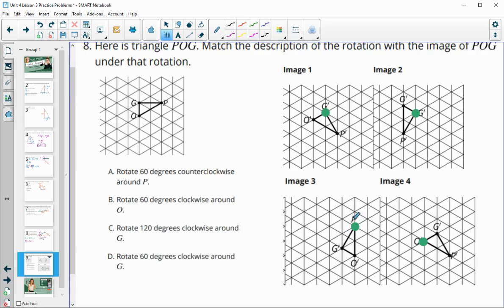So the one where P stayed in the same spot is image 3. So this is the 60-degree clockwise rotation. In image 4, O stayed in the same spot. So this is the 60-degree clockwise rotation around O.